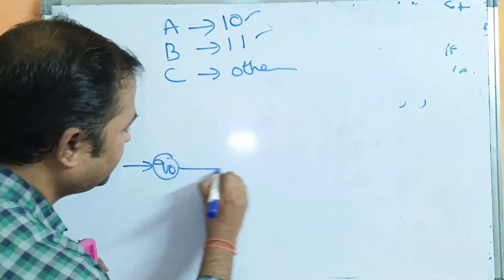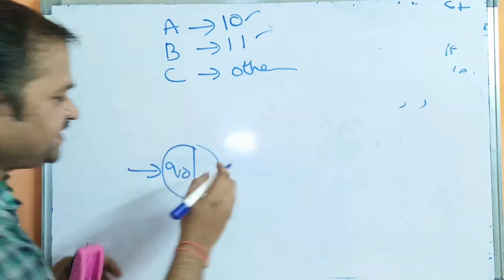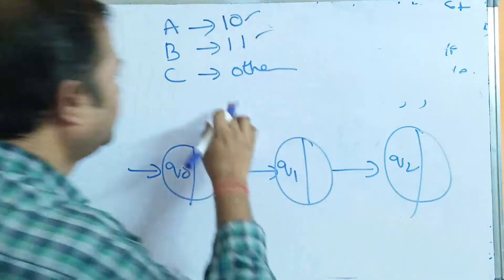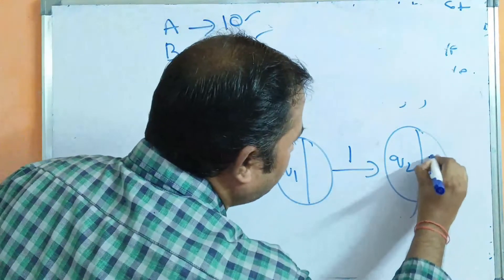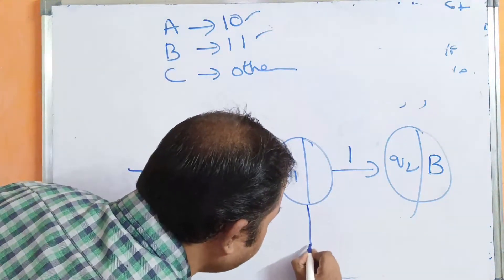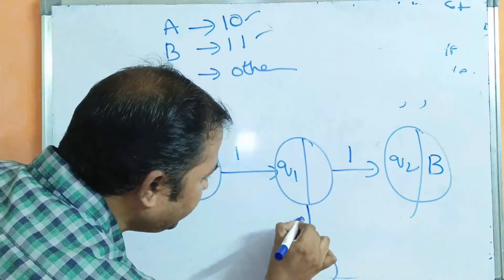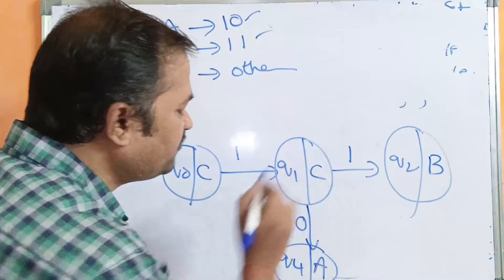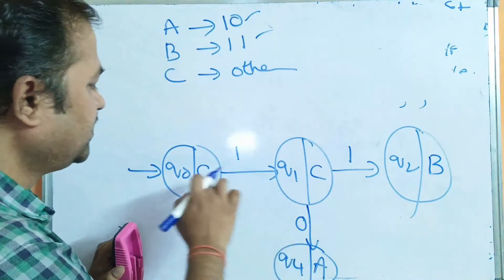Q0 is the starting state. We draw the states in big circles because in a Moore machine we have to specify the output within the circle. We have Q1 and Q2 as the remaining states. If the input ends with 1,1 then the output is B, so Q2 gets output B. If the input ends with 1,0 then the output is A. We take one more state Q4 which gets output A. The output of Q0 is C and the output of Q1 is C. Otherwise the output is C.